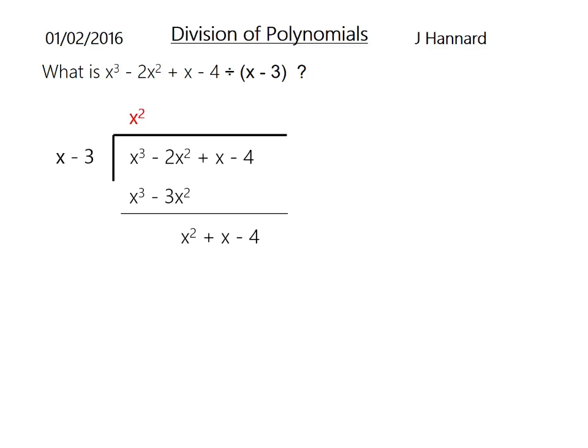The x - 4 just drops down. We'll ask ourselves again, what do we times x by to get x²? We get x. Then we times it out. We subtract again. x² minus x² is 0. x minus -3x is really x + 3x, which is 4x. Then we ask ourselves, what do we times x by to get 4x? We say 4, times it out. Subtract: 4x minus 4x is 0, -4 minus -12 is the same as -4 + 12, which is 8. That is our answer and our remainder.